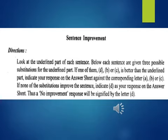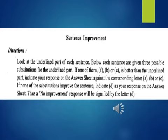In this section, you have to improve the sentence — you have to find how the sentence can be better. You have to find the error and then improve on the sentence. Look at the underlined part of each sentence. Below each sentence are given three possible substitutions for the underlined part. If one of them, A, B, or C, is better than the underlined part, indicate your response on the answer sheet against the corresponding letter. If none of the substitutions improve the sentence, indicate D as your response. Thus, no improvement response will be signified by the letter D.